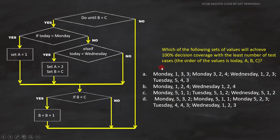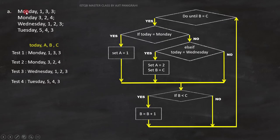Now the question is: which of the following sets of values will achieve 100% decision coverage with the least number of test cases? The order of the values is today, A, B, C. To answer this, we have to analyze each of the options one by one. This is option A, and it has four test cases, where the first element represents today's day, and A, B, and C are represented by the second, third, and fourth elements.